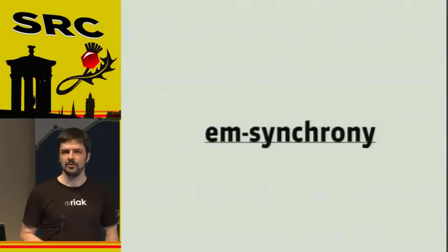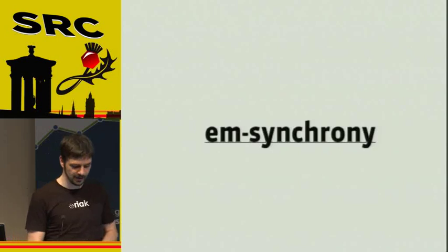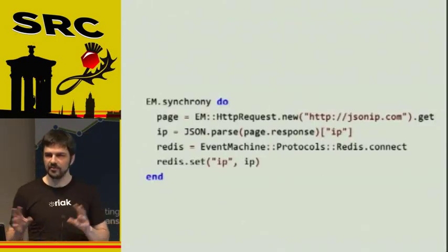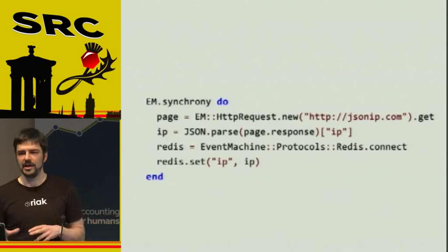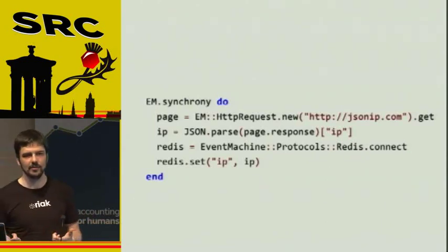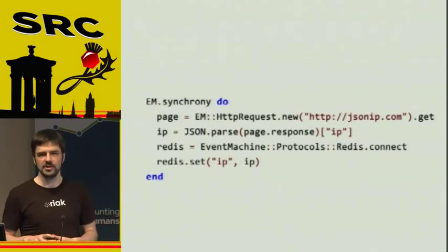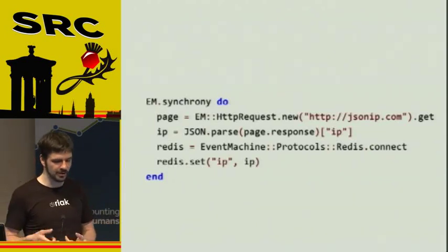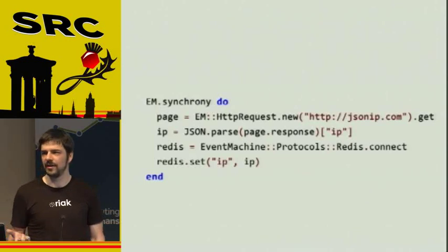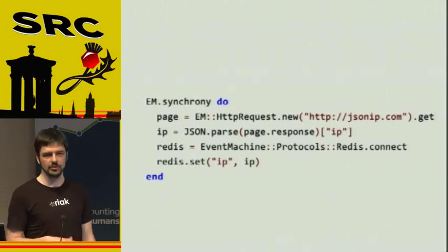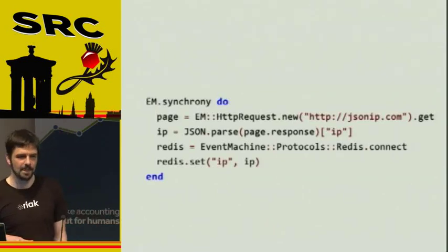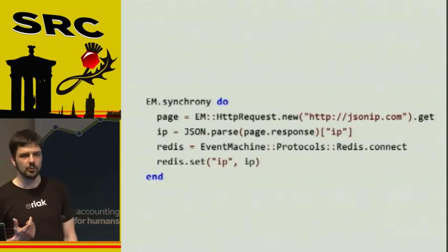Ilya Grigorik built a nice library on top of that called emSynchrony, which basically does all the fiber magic for you. It patches libraries like EM HTTP Request, database libraries, memcache libraries, and so on, to use fibers instead of just callbacks. So what you get is a nice bundle of libraries which you can use in a procedural way, and you still get all the benefits from using evented IO, but your code will look a lot nicer.